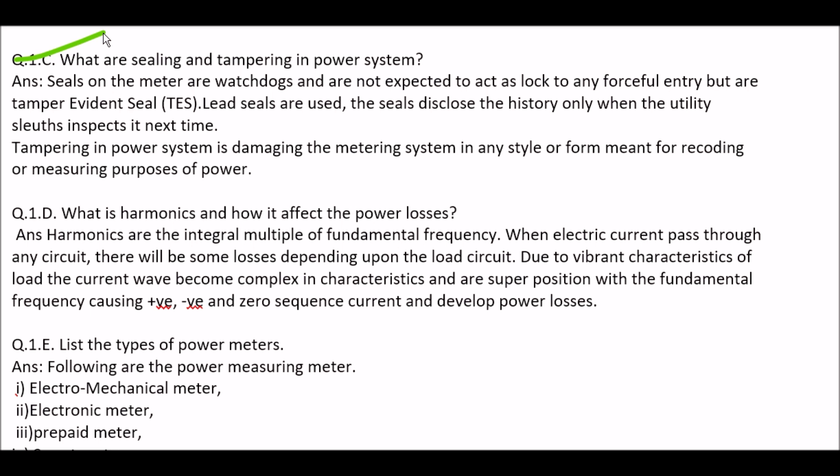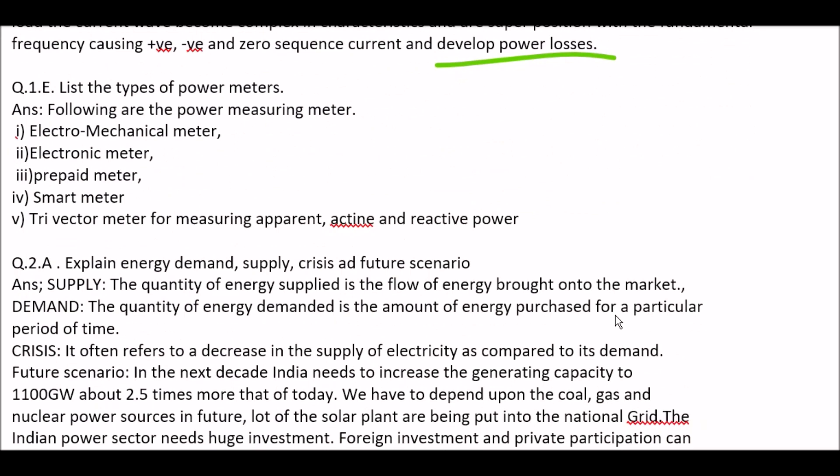Next question: what are harmonics and how do they affect power losses? Answer: harmonics are the integral multiples of the fundamental frequency. When electrical current passes through any circuit, there will be some losses depending upon the load circuit. Due to the variant characteristics of the load, the current may become complex in characteristics and are superimposed with the fundamental frequency, causing positive, negative, and zero sequence currents, and developing power losses.